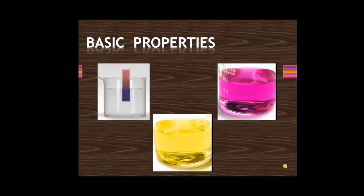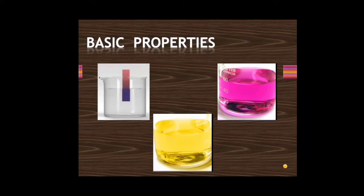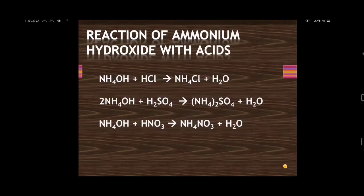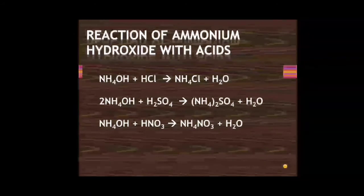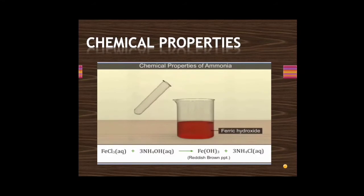The basic properties of ammonia: it turns red litmus blue, turns methyl orange yellow, and turns phenolphthalein pink. It is a non-supporter of combustion. Ammonium hydroxide reacts with acids to give corresponding salts and water — confirming its basic nature — with reactions shown for HCl, H2SO4, and HNO3.